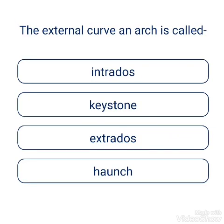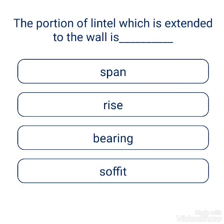The external curve of an arch is called extradose. Options: intradose, keystone, extradose. The internal curve of an arch is called intradose. The portion of a lintel which is extended into the wall is called the bearing. Options: span, fries, bearing, soffit. The answer is bearing.